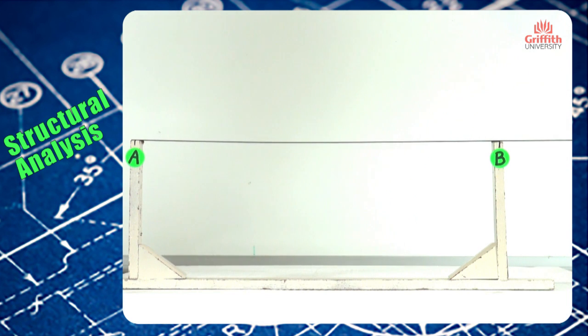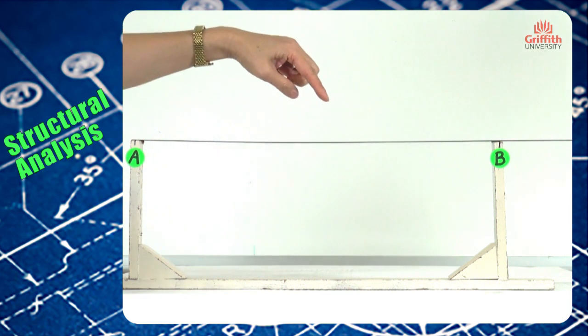This is a simply supported beam with overhang. A is a hinge support and B is a roller support. If we apply a concentrated load somewhere in between A and B, how would this beam deflect? Let's